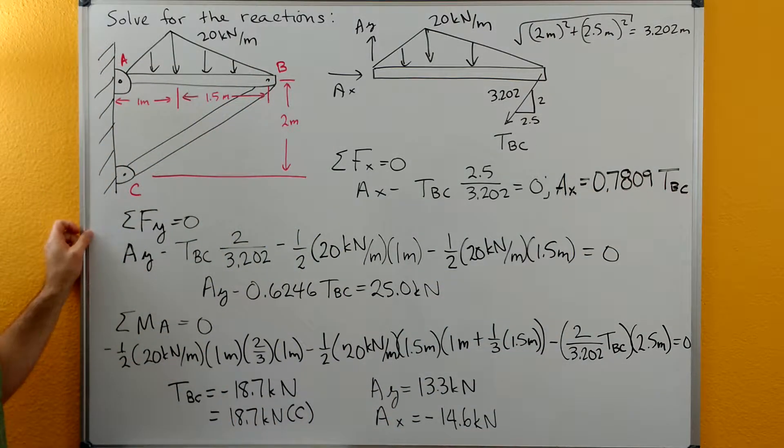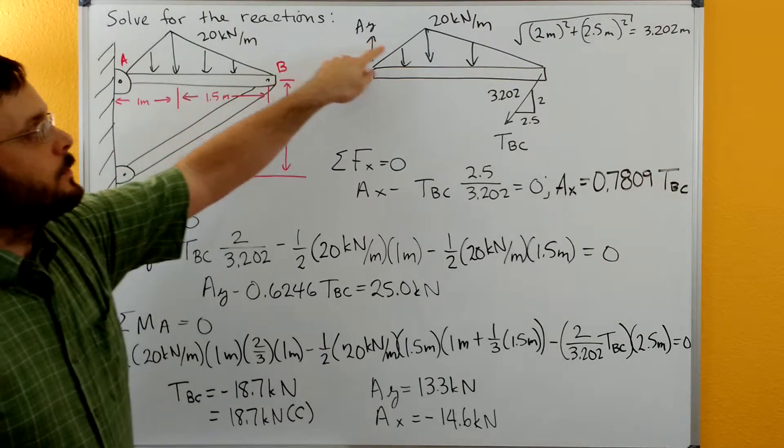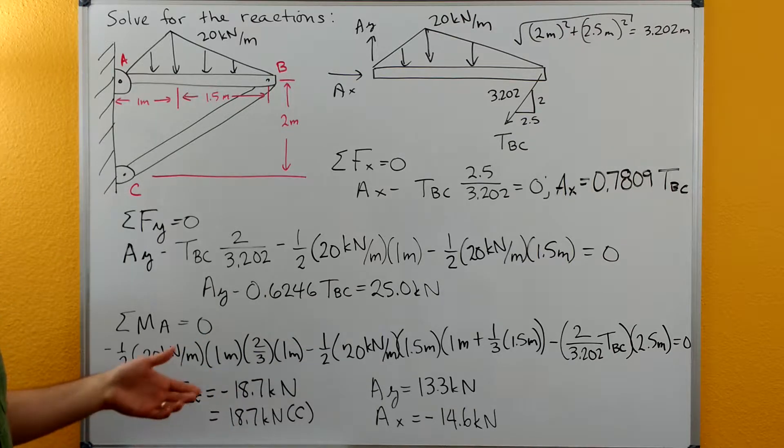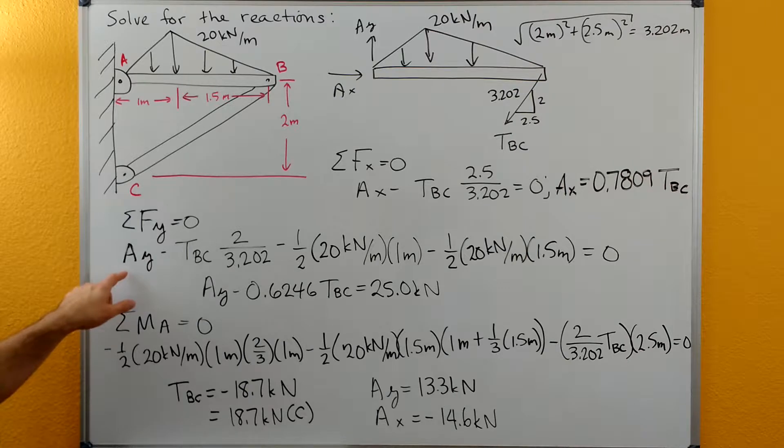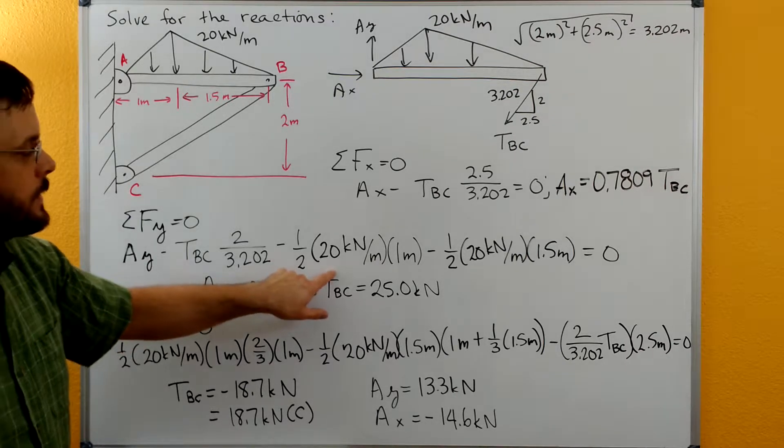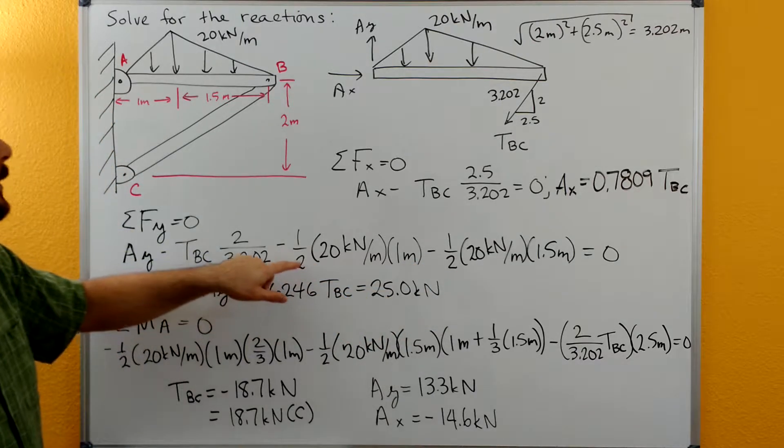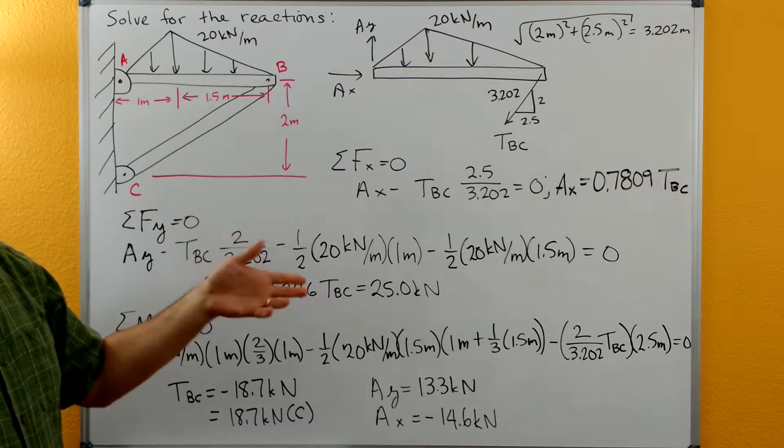Then we can do our sum of forces in the Y equation. So we have AY and then with this triangle because it's not an isosceles triangle we're gonna eventually have to break it up into two right triangles. So I just went ahead and broke it up and showed it as the two right triangles here in the sum of forces in the Y equation.